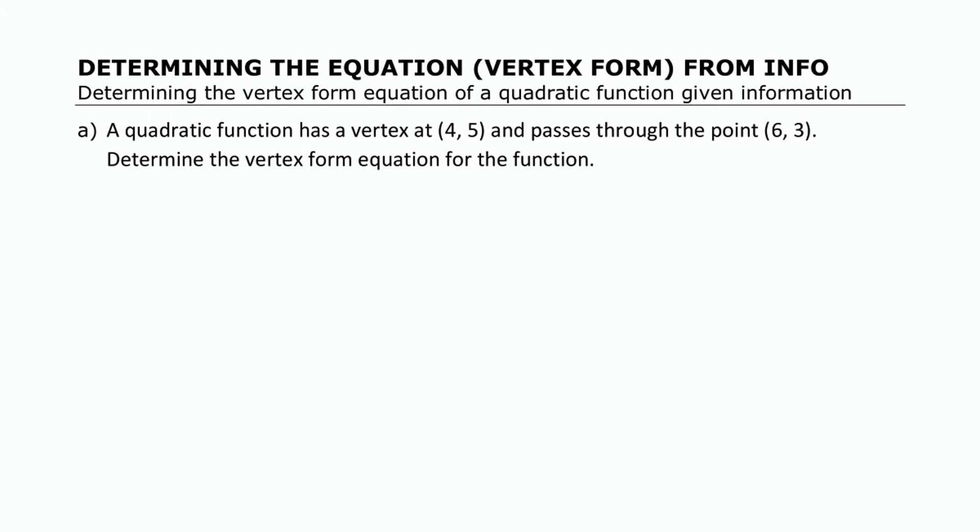Alright, so if I'm going to work out a vertex form equation when I'm given some information, we have to think about this a little bit. I know what the vertex is here. So if I draw a really rough sketch, you know that 4 and 5 is my vertex, and I know that 6 and 3 is a point on the thing. So that means it has to be going like that somehow.